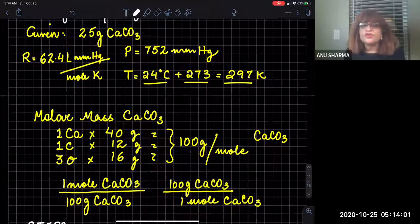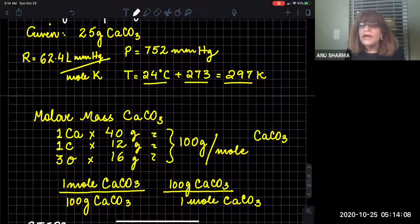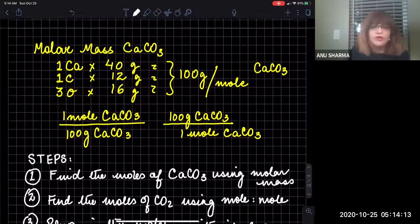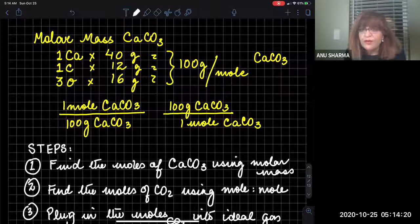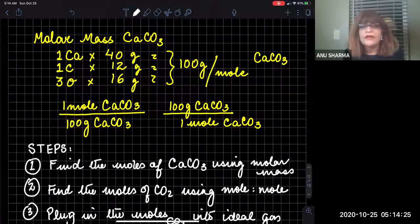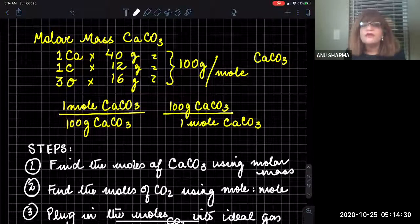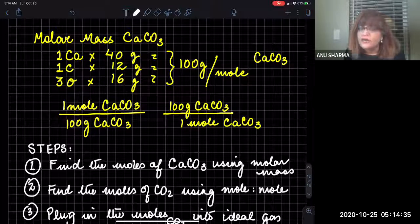Next is the temperature. If the temperature is given in Celsius, you always have to convert it to Kelvin by adding 273. Now we calculate the molar mass of calcium carbonate, because that's the amount given to us and we need to convert it to moles. Calcium carbonate has one calcium, one carbon, and three oxygens.